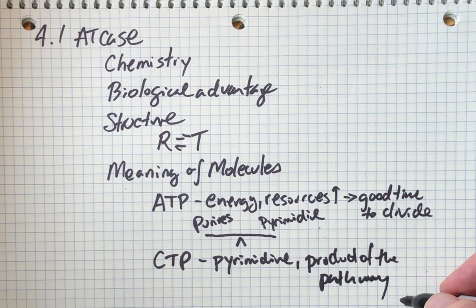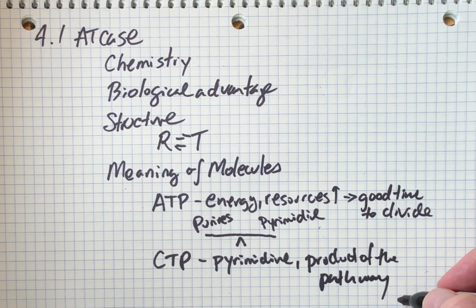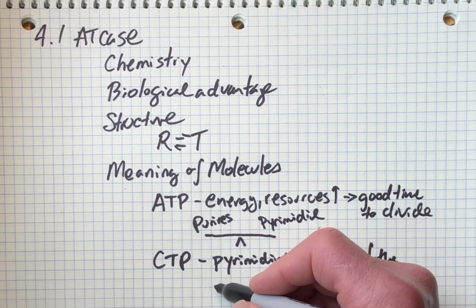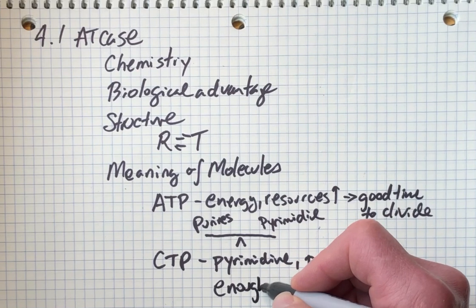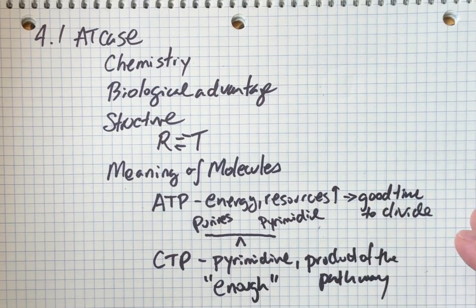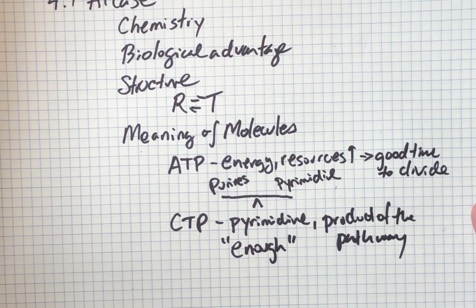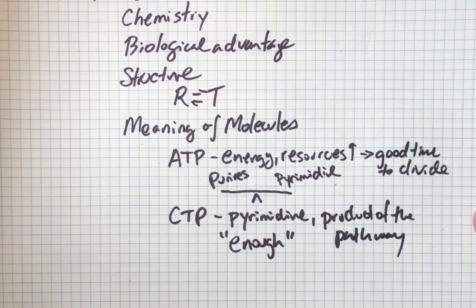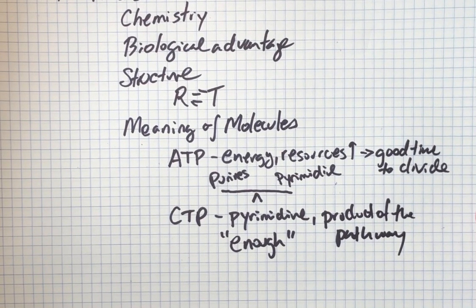When levels of CTP are high, that informs the enzyme that we have enough. So one of the meanings is that we've made enough of the building blocks for DNA in terms of pyrimidine levels.